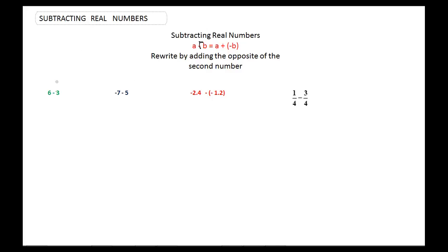So let's try that here. We take the first number and we're going to add the opposite of 3, which is negative 3. And 6 plus a negative 3 — if we did the absolute value thing, we'd have the absolute value of 6 minus the absolute value of negative 3. That would be 6 minus 3, which is 3. And we all know that 6 minus 3 is 3, so that one checks.